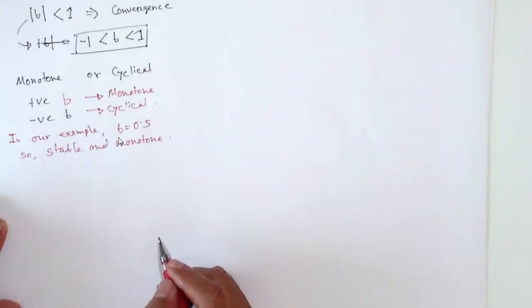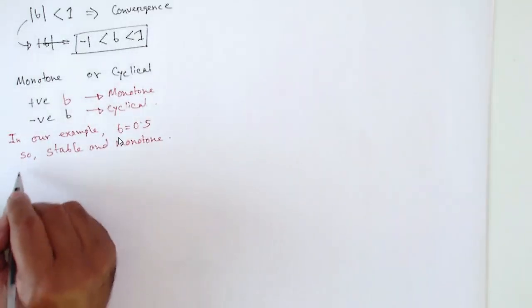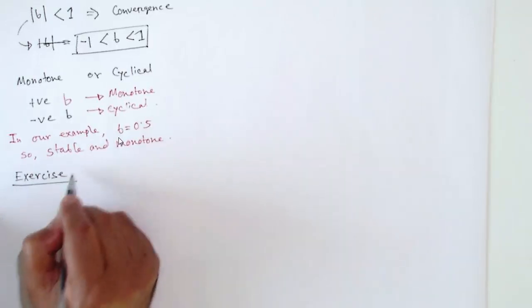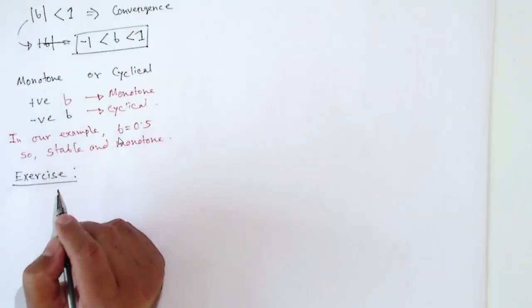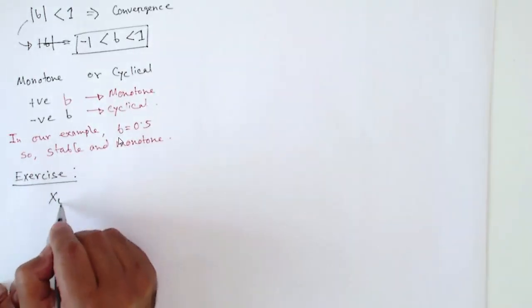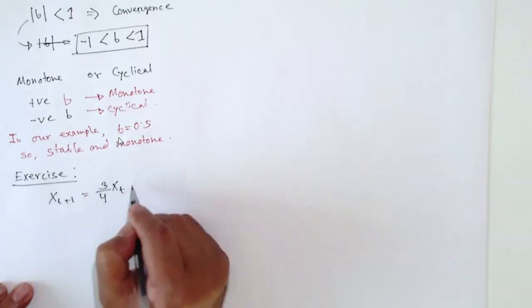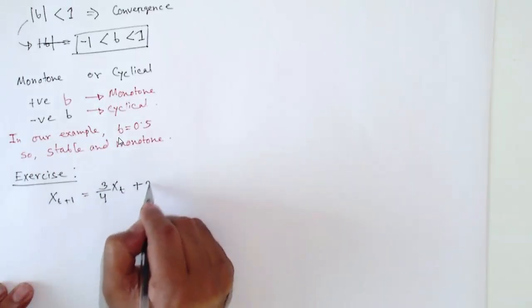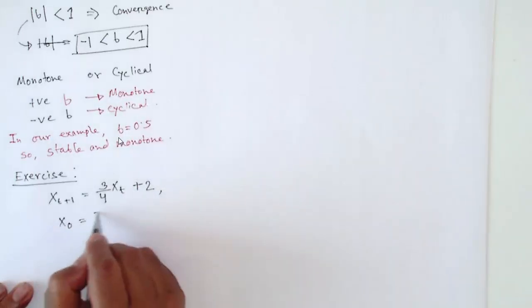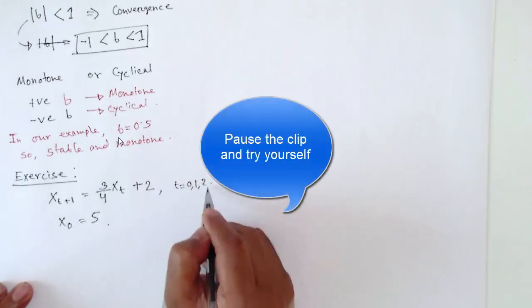For you to try as an exercise: the LDE is x_{t+1} equals (3/4)*x_t plus 2, with initial value x_0 equals 5.